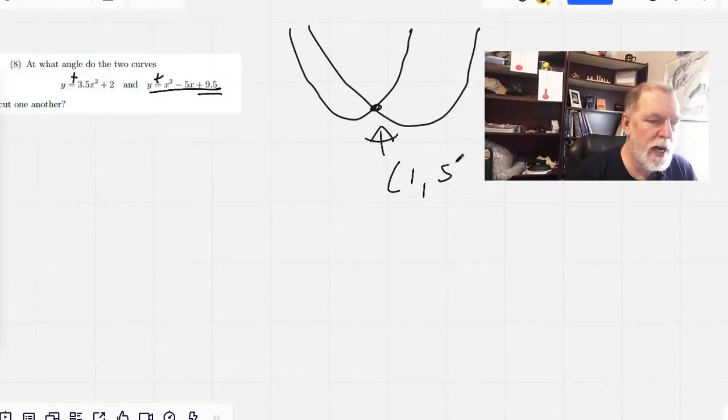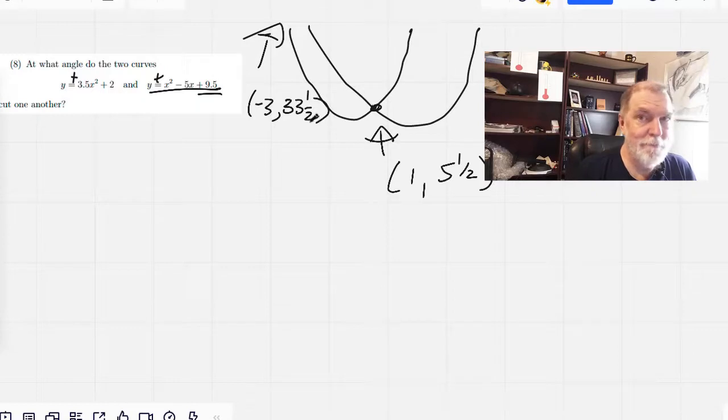So let's clear the screen and look at just that information now that we have. 1 comma 5 and a half. And then over here, someplace off the screen, we've got negative 3 comma 33 and a half. We want to know this angle, right here, right where these hit.